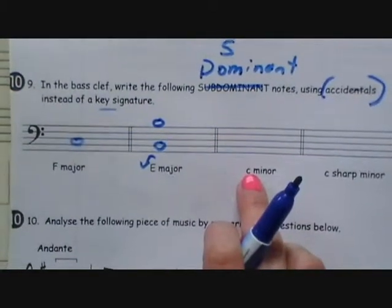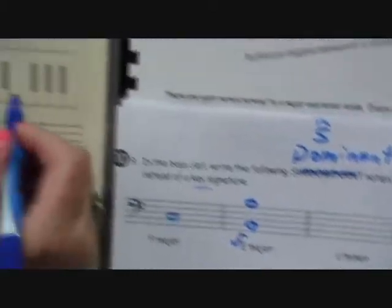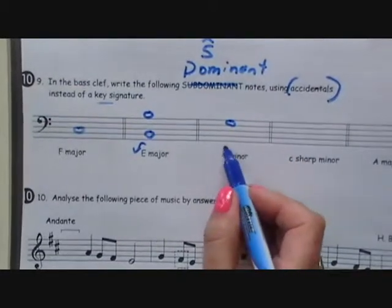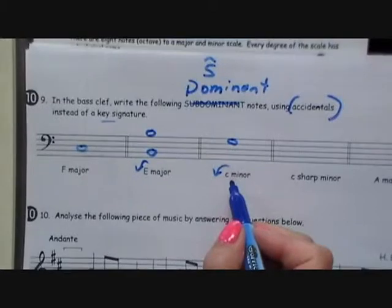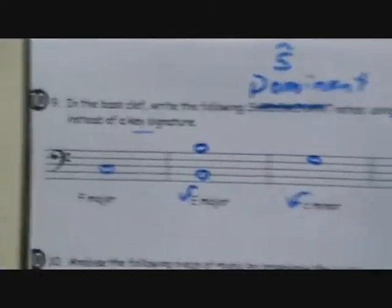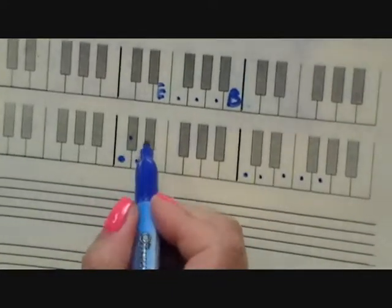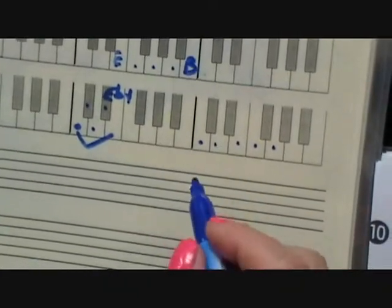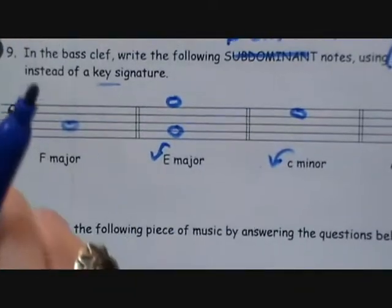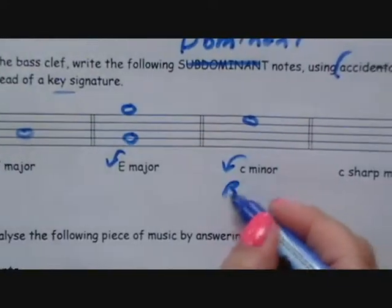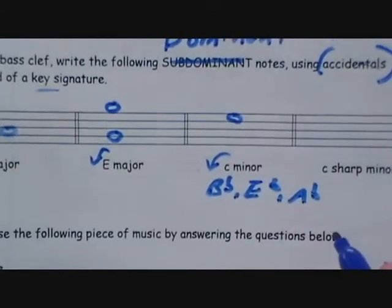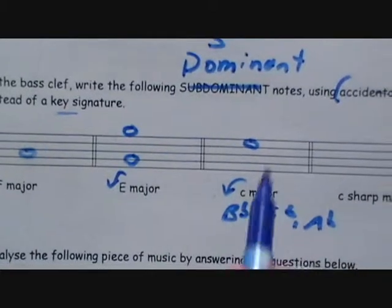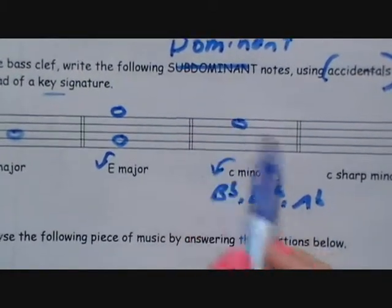For C minor, the dominant note: 1, 2, 3, 4, 5 — we land on G. Because it's a minor question, we have to know who C minor is related to. We climb up 1, 2, 3 — it's related to E flat major. It has to be three letter names away, so it's not D sharp, it's E flat major. What's in the key signature? 'Battle ends and' — B, E, A. The G is the fifth note up, the dominant from C, and it's not affected, so we don't need an accidental.